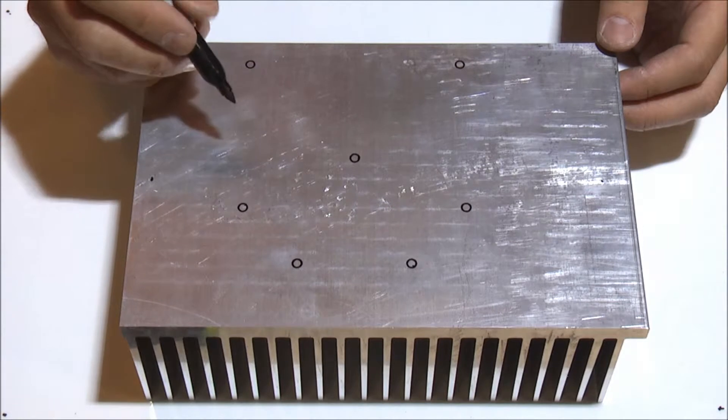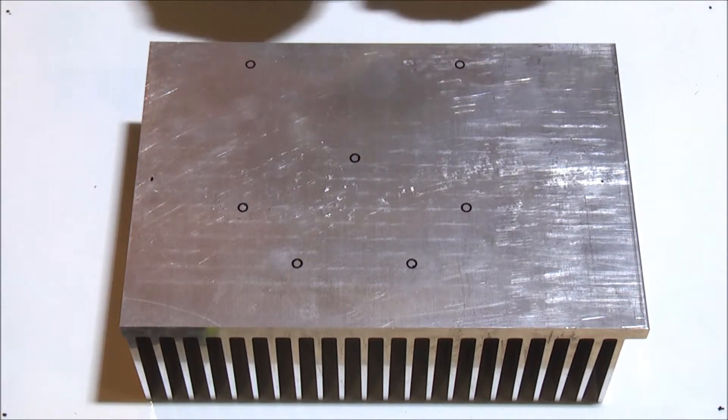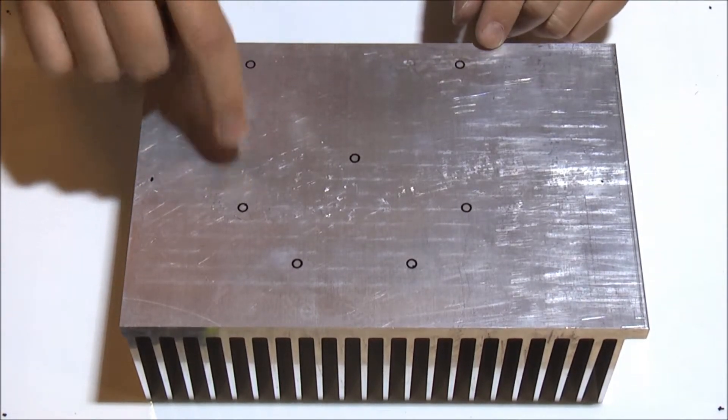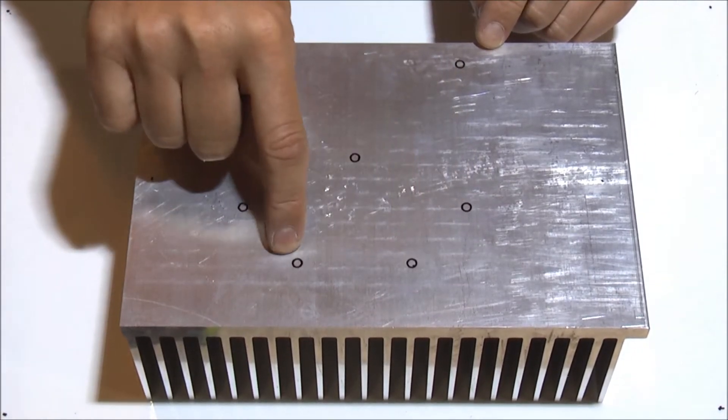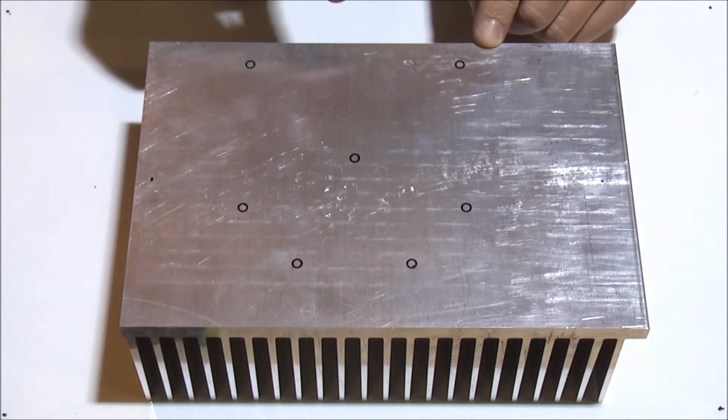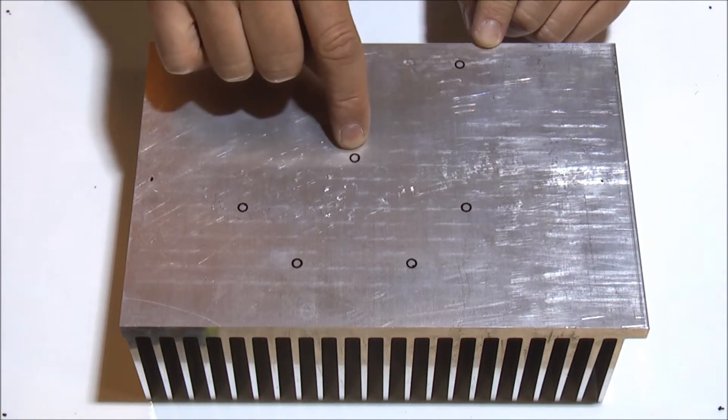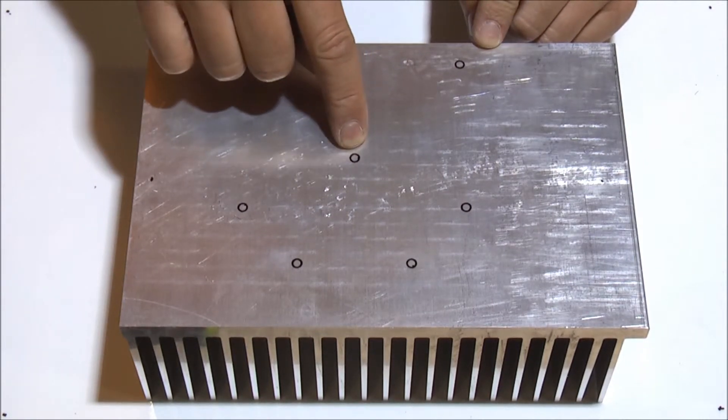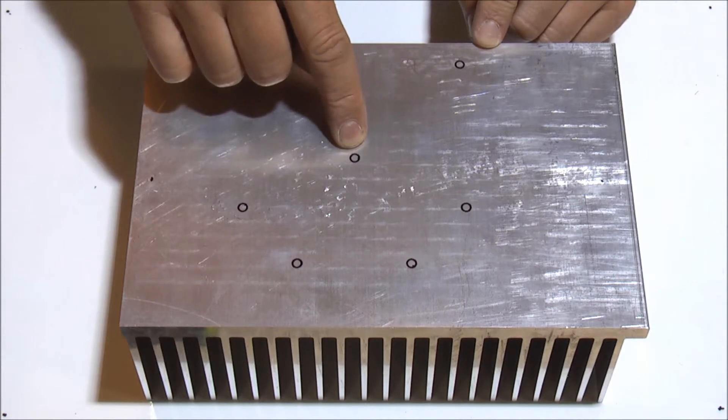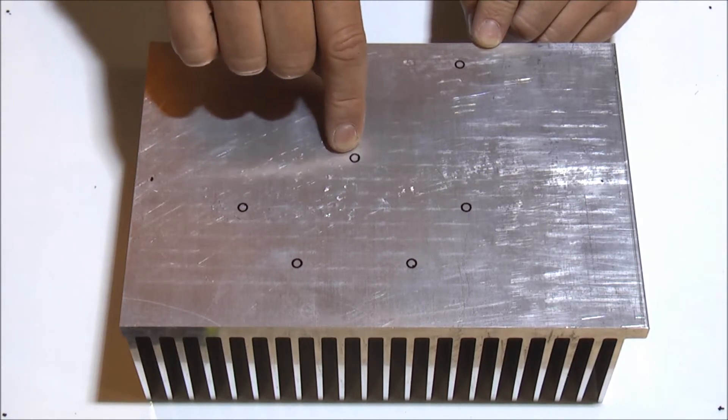Next what we are going to do, we are going to drill and tap the six holes here with 1032 thread. This will be a hole that will not go all the way through. Just about maybe 3 eighths of an inch. This will be where we would put the thermistor.